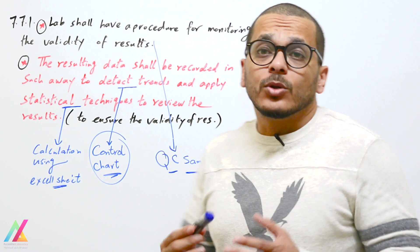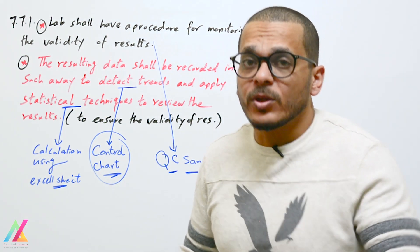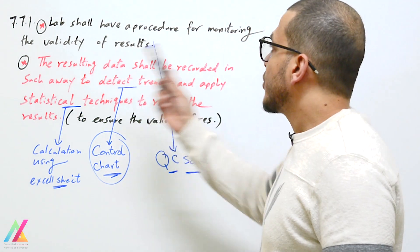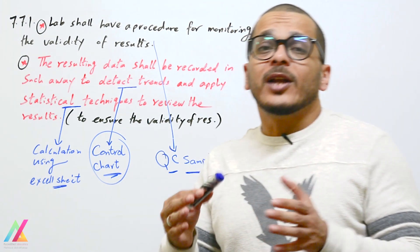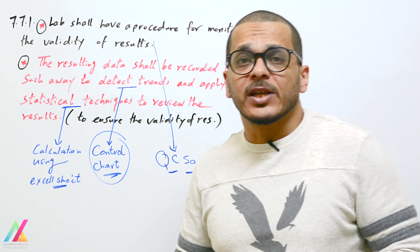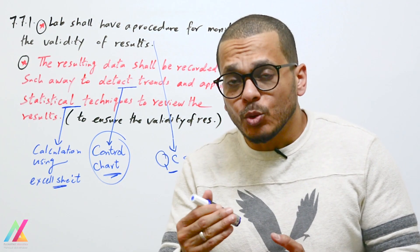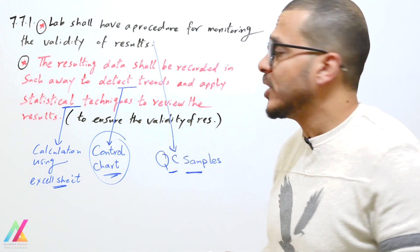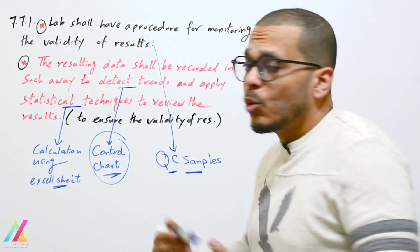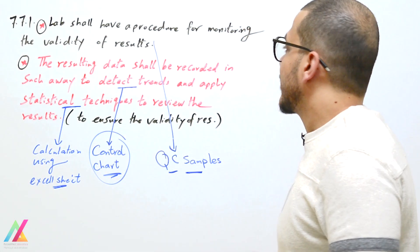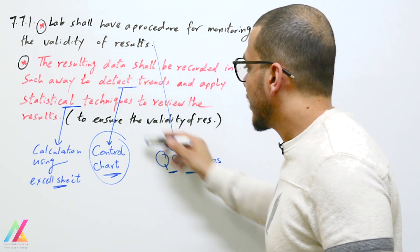Clause 7.7.1 covers monitoring the validity of results using quality control samples run with every sequence. The lab shall have a procedure for monitoring the validity of results. The resulting data shall be recorded in such a way as to detect trends.